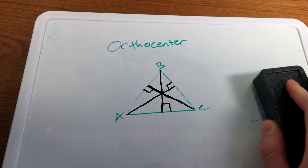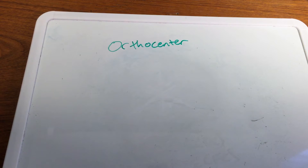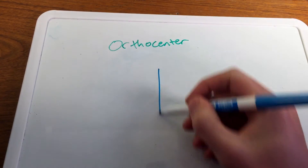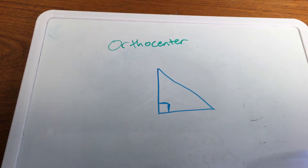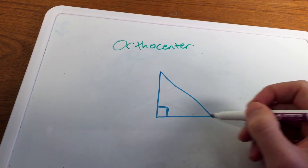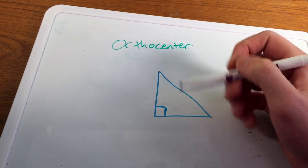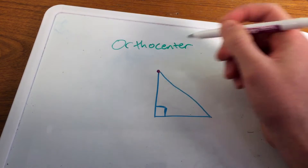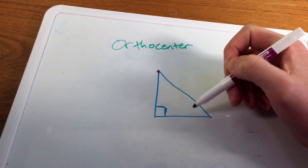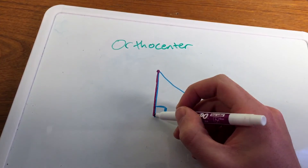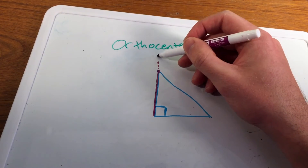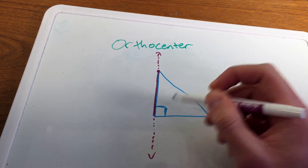One thing I find interesting is that with a right triangle, the orthocenter will always be at a specific point on the triangle. So I'm going to create a right triangle here and find the three altitudes. If this is my base, the altitude — the height of the triangle — connects the vertex to its opposite segment perpendicularly, going along the segment here. You can even continue drawing that line on forever.